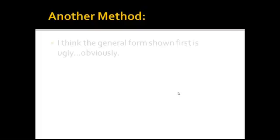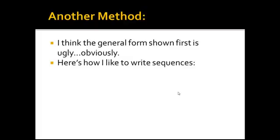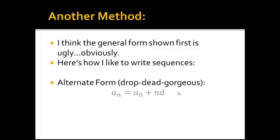So here's another method. I think that the general form shown first is ugly, obviously I stated that. Here's how I've always written sequences. And I call this the drop-dead gorgeous form, or the alternate form, a sub n equals a sub 0 plus nd.